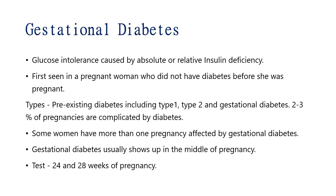In type 1 there is deficiency of insulin in the body, and in type 2 the insulin that is produced in the body is not utilized properly, and gestational diabetes is the diabetes that is seen only during pregnancy. 2 to 3 percentage of pregnancies are complicated by diabetes, and some women have more than one pregnancy affected by gestational diabetes. It usually shows up in the middle of the pregnancy.